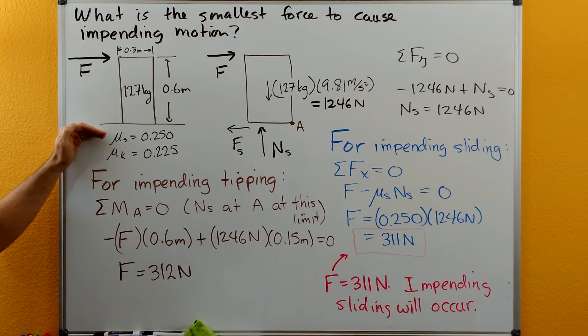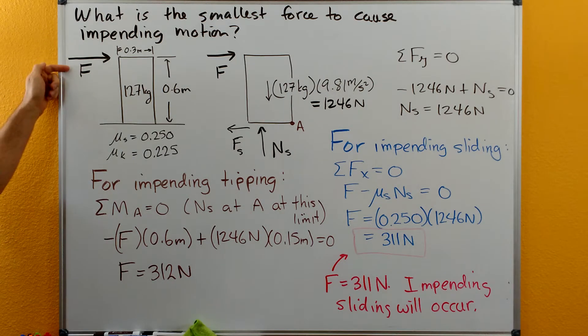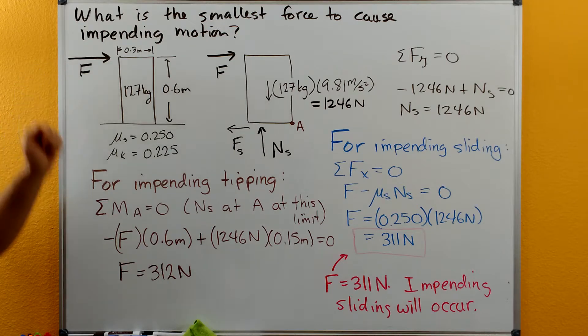We have a coefficient of static friction of 0.250 and a coefficient of kinetic friction of 0.225. The problem is asking us what is the smallest force F here to cause impending motion.